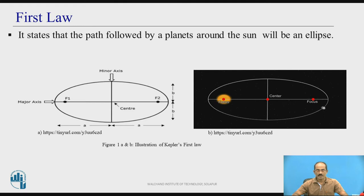See this animation. The sun is at one focus, that is at F1. The Earth is revolving around this sun, but it is taking an elliptical path. That states Kepler's first law.